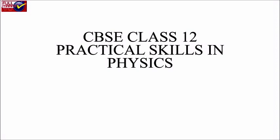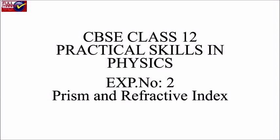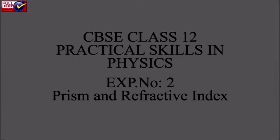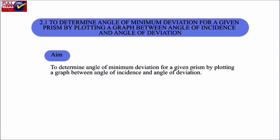CBSE Class 12 Practical Skills in Physics. Experiment Number 2: Prism and Refractive Index. 2.1 To determine angle of minimum deviation for a given prism by plotting a graph between angle of incidence and angle of deviation.